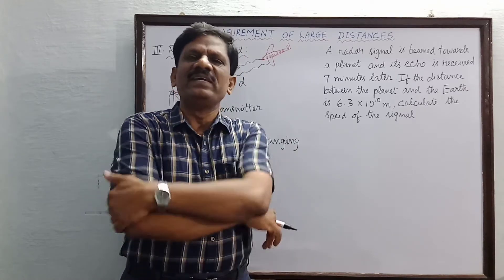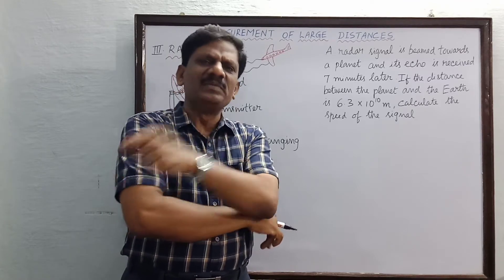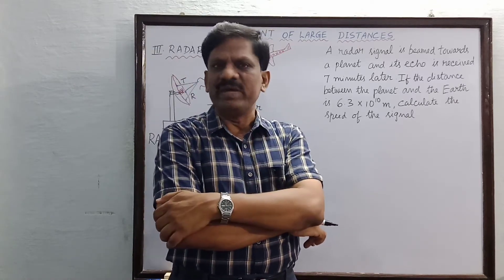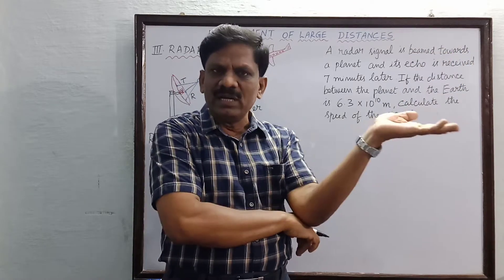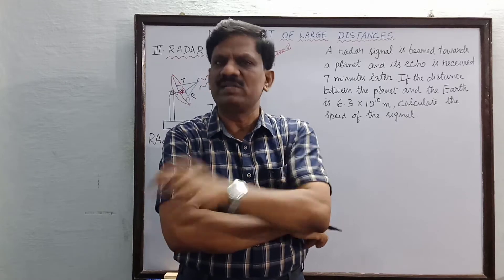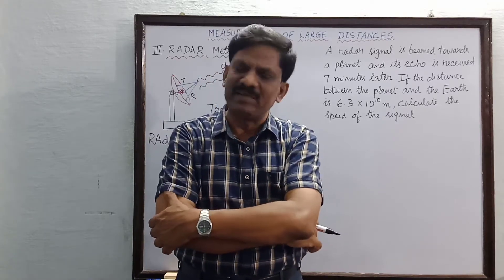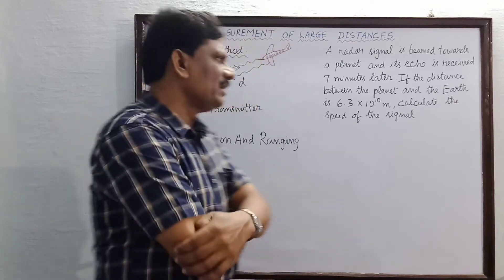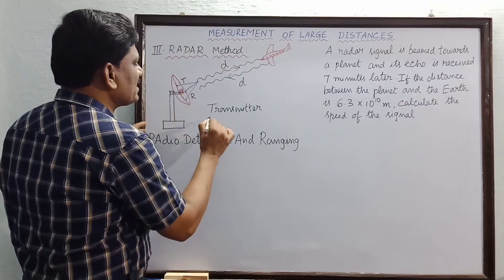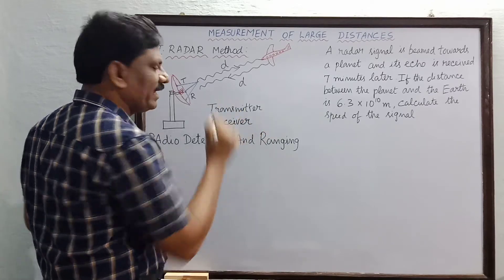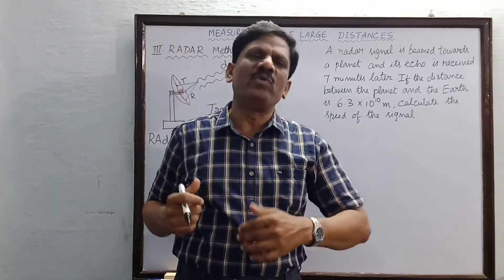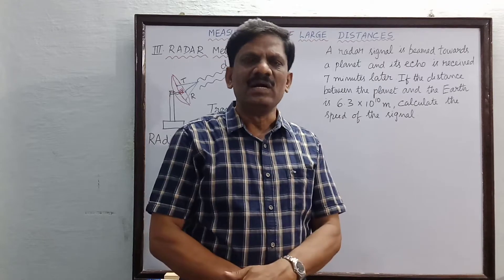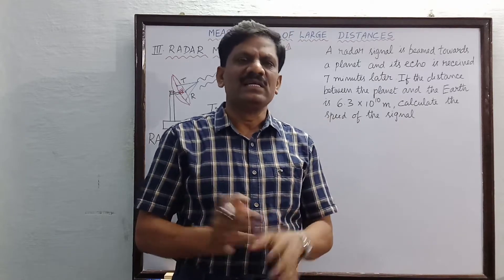The transmitter is provided with a timer circuit so that the total time taken by the radio waves to go and come back can be recorded. The time is measured by this timer, which is provided with the transmitter itself. The radar is also provided with another device called the receiver, which receives the reflected radio pulse from targets such as mountains, icebergs, aeroplanes, and distant planets.